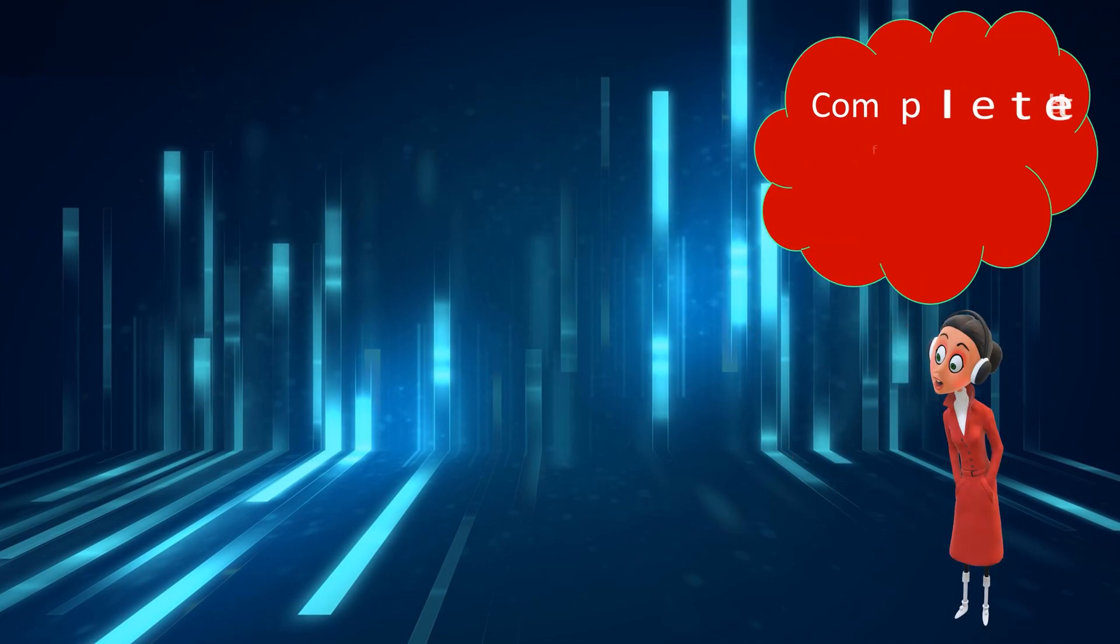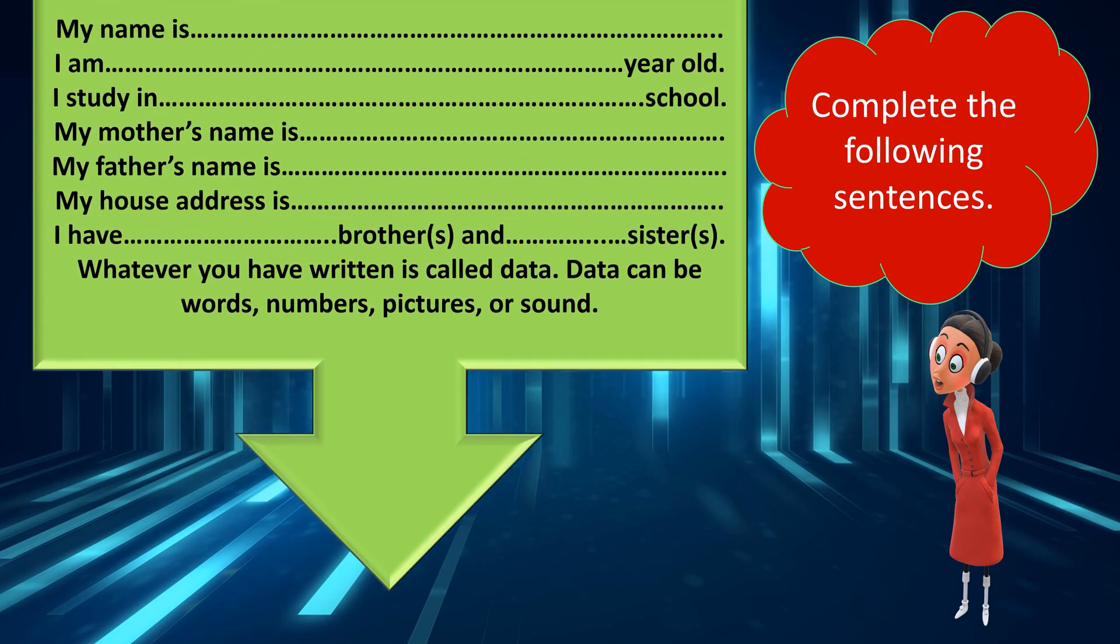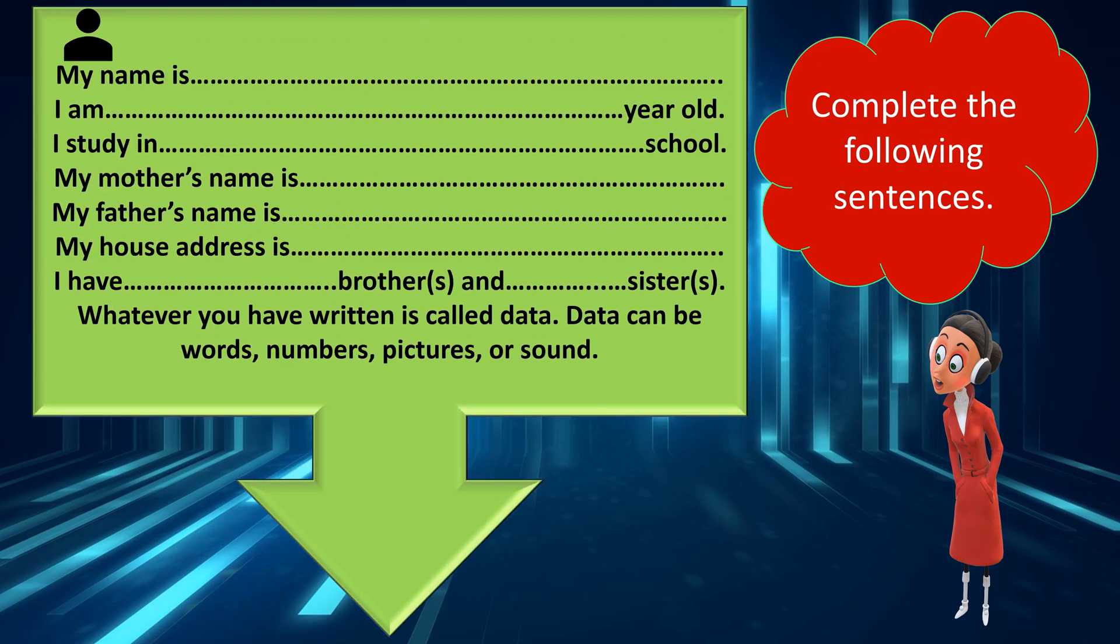Complete the following sentences: My name is, I am years old, I study in school, my mother's name is, my father's name is, my house address is, I have brothers and sisters. Whatever you have written is called data. Data can be words, numbers, pictures, or sound.